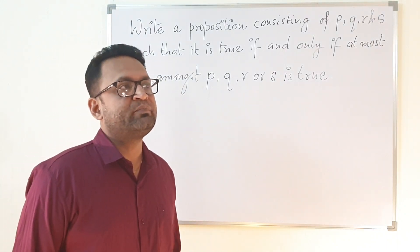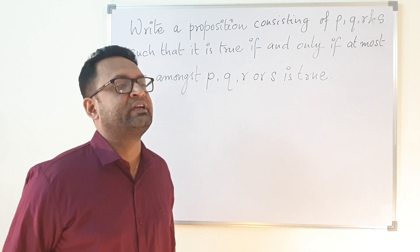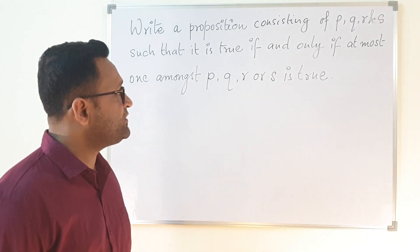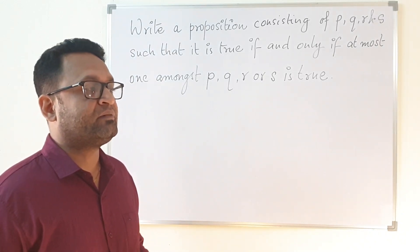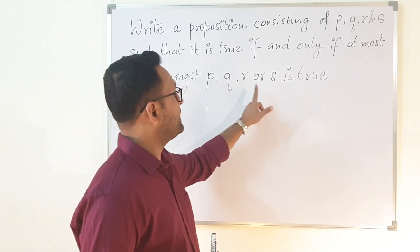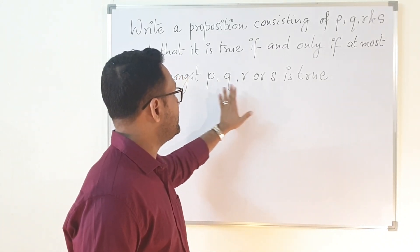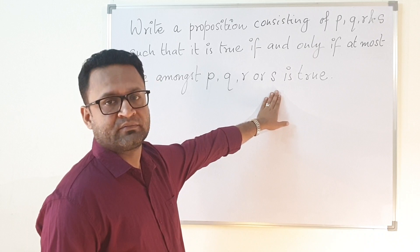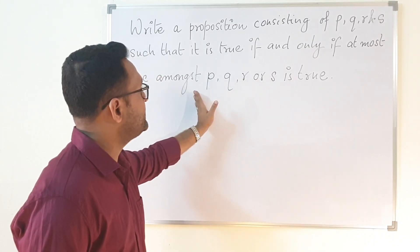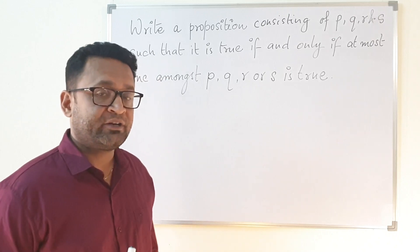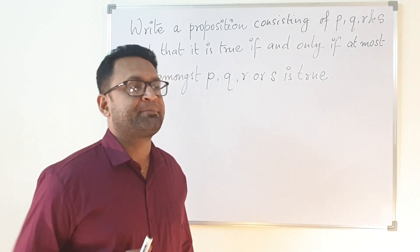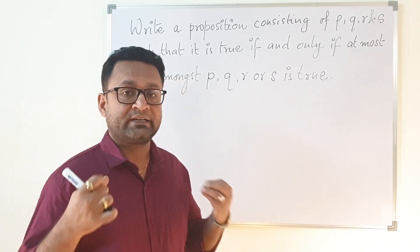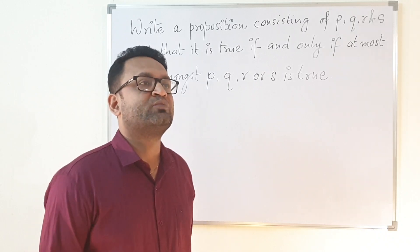Let us first understand what 'at most' means. At most means this is the maximum value it can attain. So 'at most one' means: if P is true then Q, R, S will be false; if Q is true then P, R, S will be false; if R is true then P, Q, S will be false; and similarly for S. But it also means that all of them can be false.